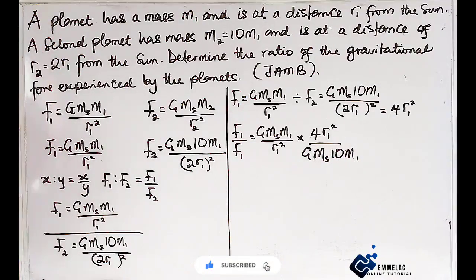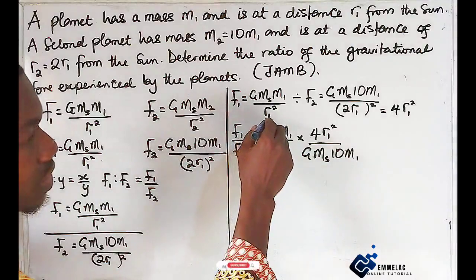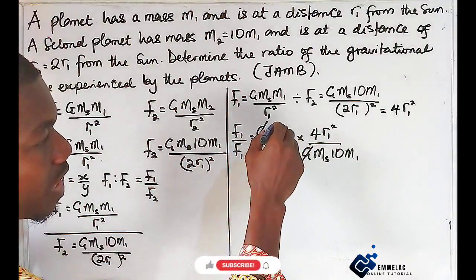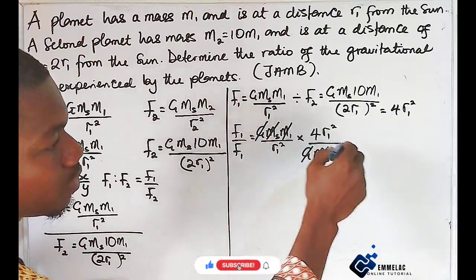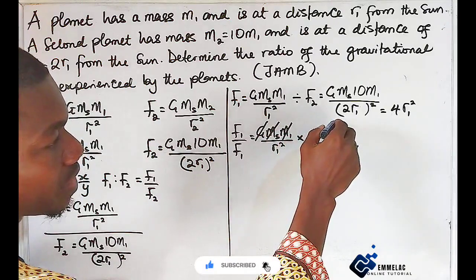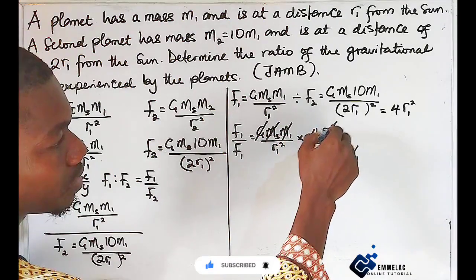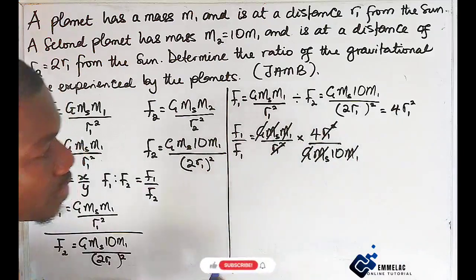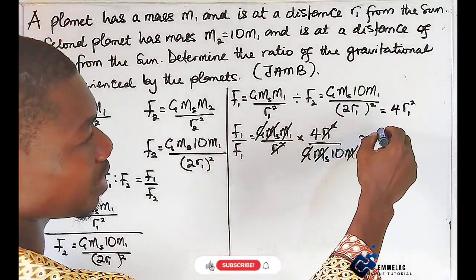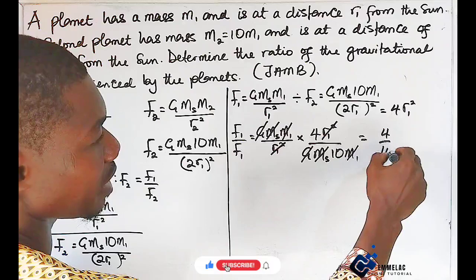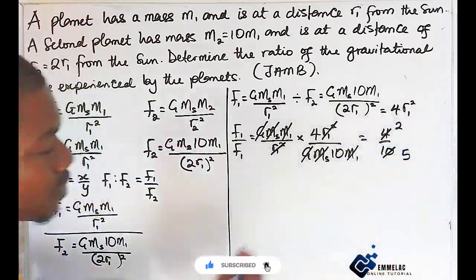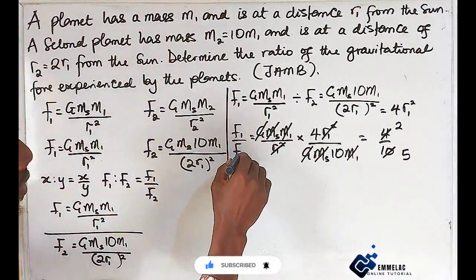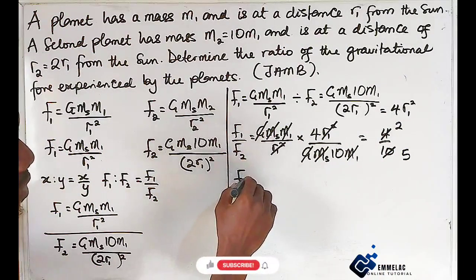We can now eliminate terms that are alike. We eliminate G, Ms, m1, and r1², so we are left with 4/10. Simplifying gives us 2/5, so F1/F2 = 2/5.